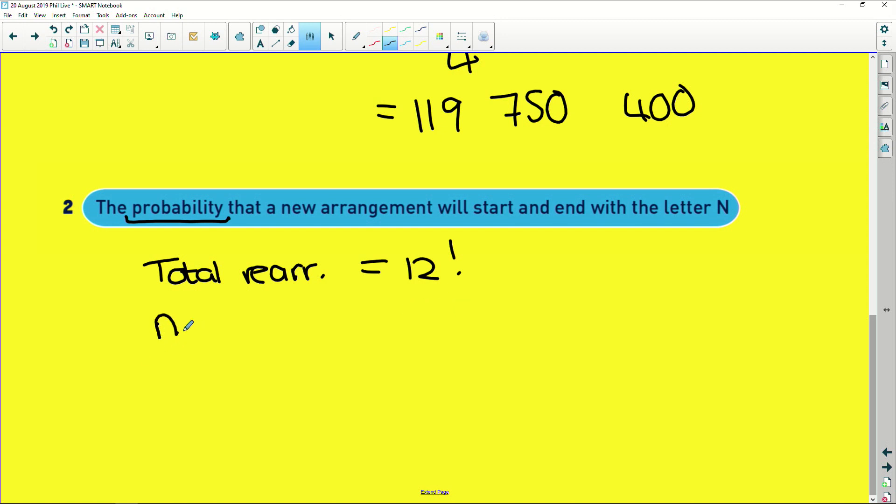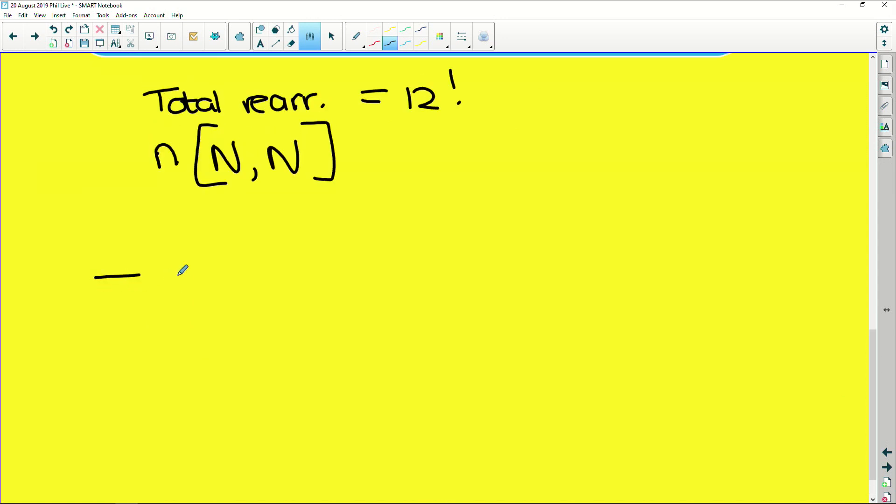Now, the number for starting and ending with N. Let's map this out. We have a 12 letter rearrangement. 1, 2, 3, 4, 5, 6, 7, 8, 9, 10, 11, 12. Starts with N, ends with N. So to start with, we have two Ns. Remember, fundamentals has two Ns in it. So we have two Ns to choose from. Once that N has been chosen, we have one left over here. And now, two of our letters have been taken away. So we have 10 left for that second letter. And then it goes down, 9, 8, 7, etc. To 1.